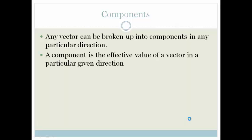A component is basically the effective value of a vector in a particular given direction. For example, if we've got a flight of stairs — let's say we've got the ground and then a flight of stairs — and you are going from this point here to this point here.